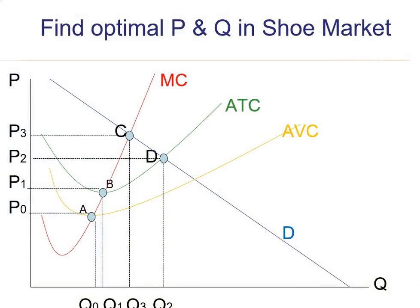Let's provide an example. Suppose that the shoe market is a competitive market, and if you could choose the optimal prices and quantities of shoes, where would you want to be? There are four different options here on the graph.